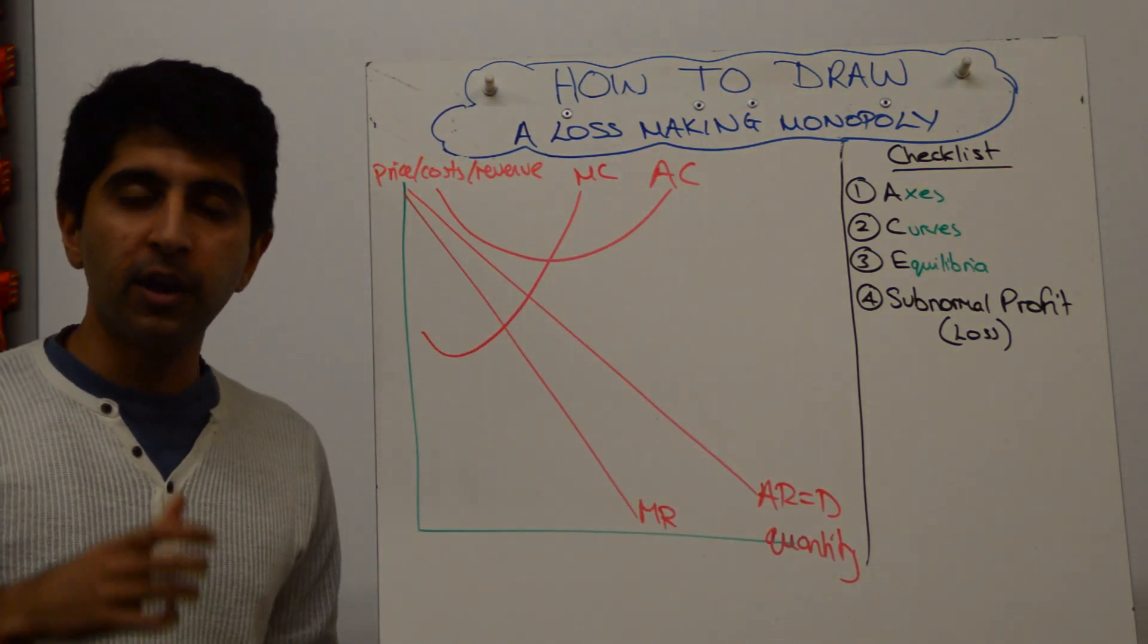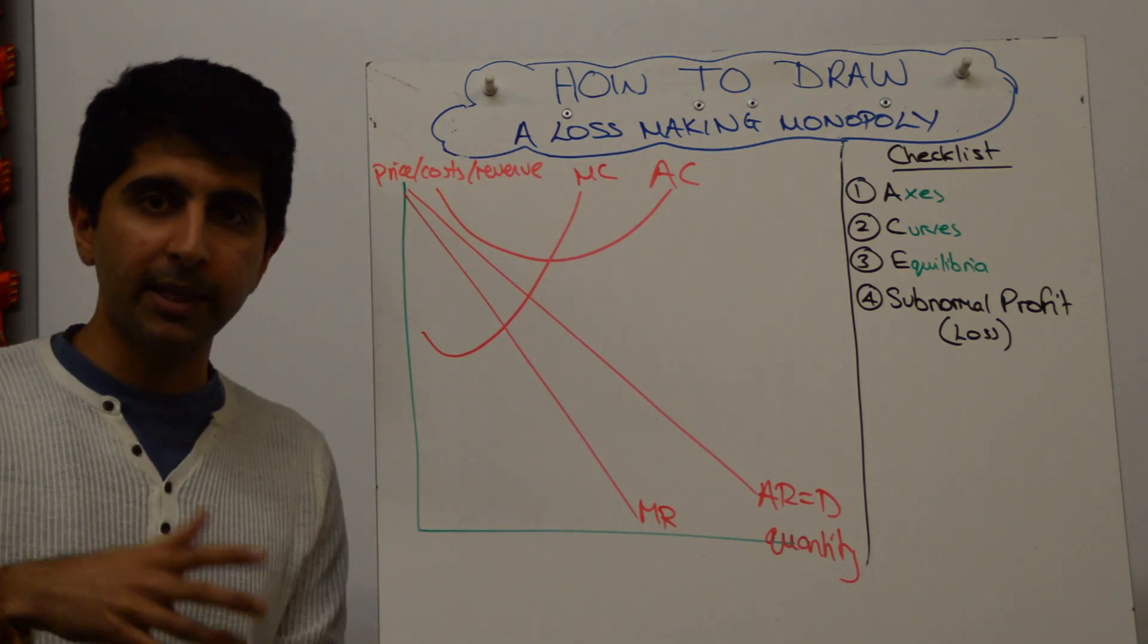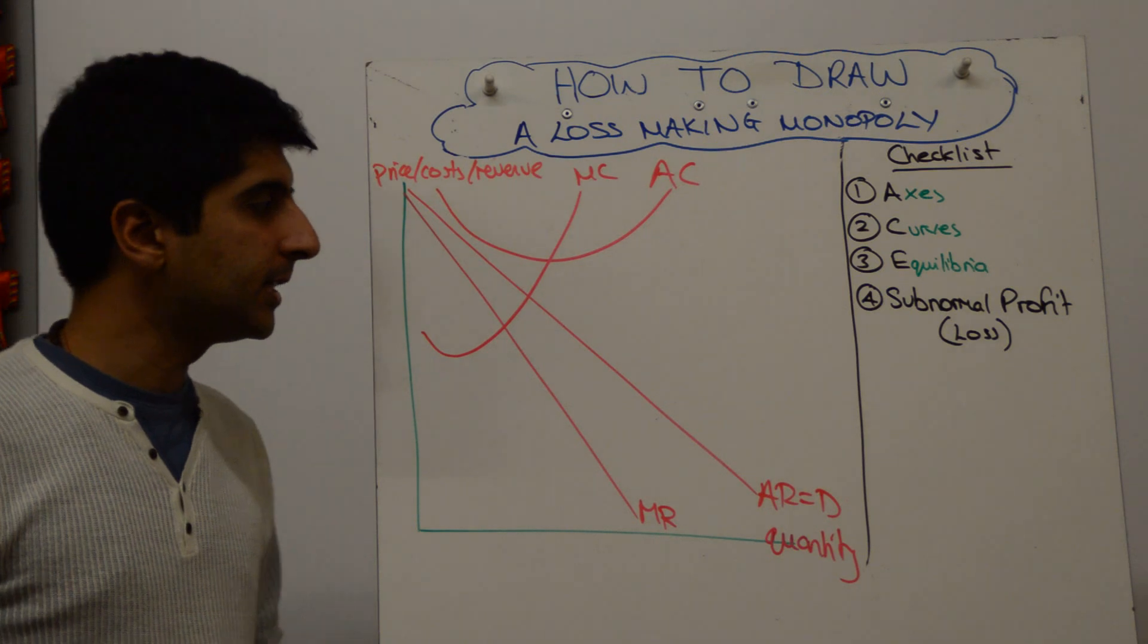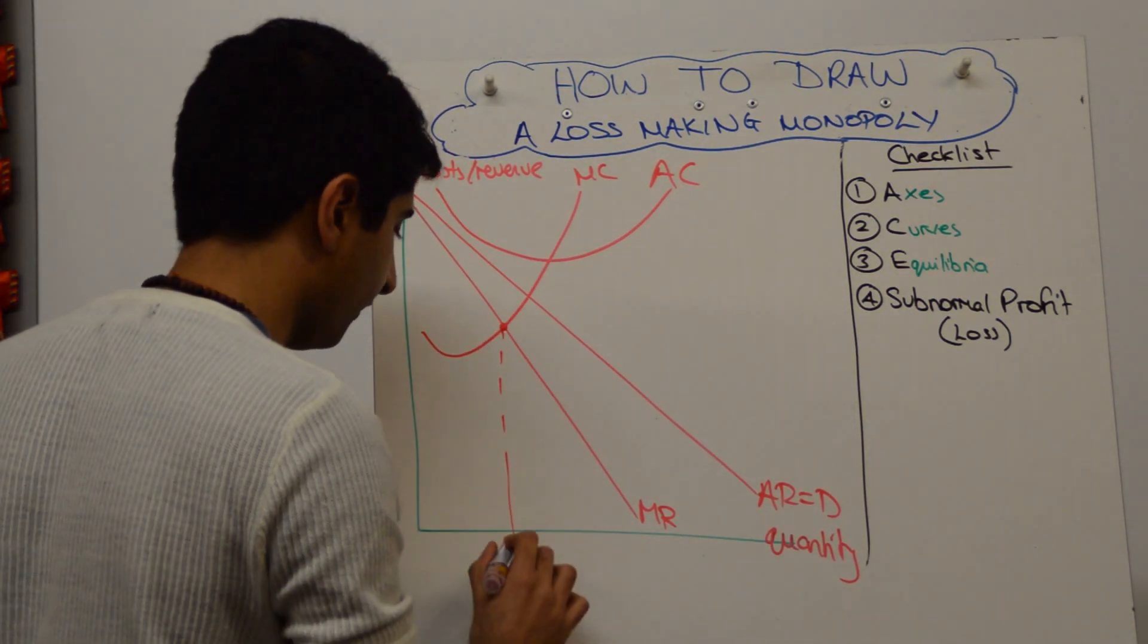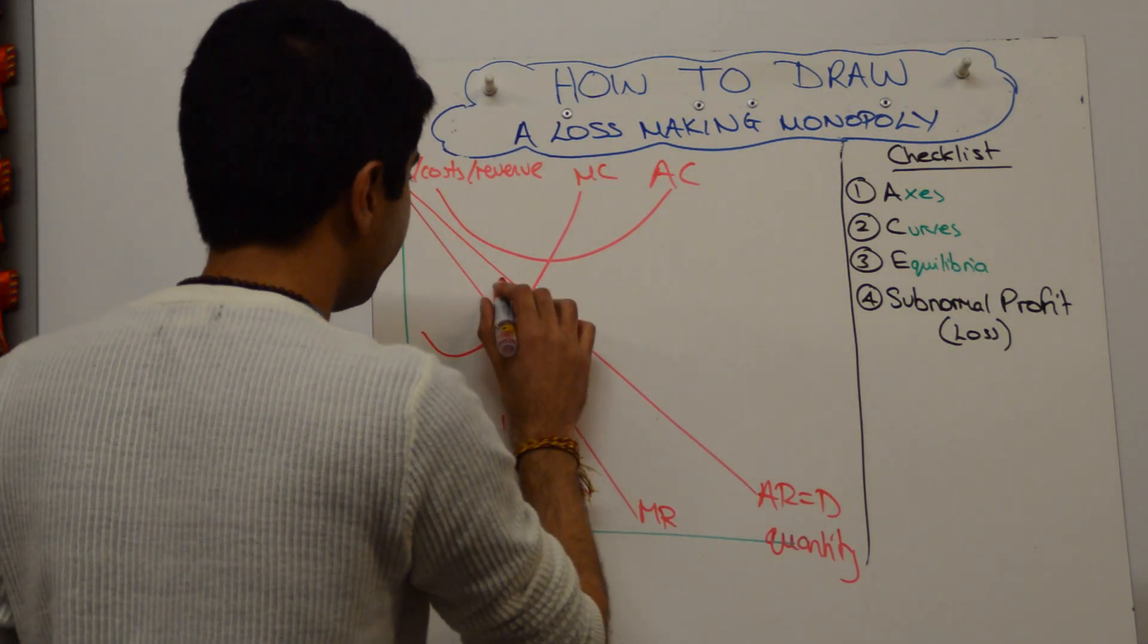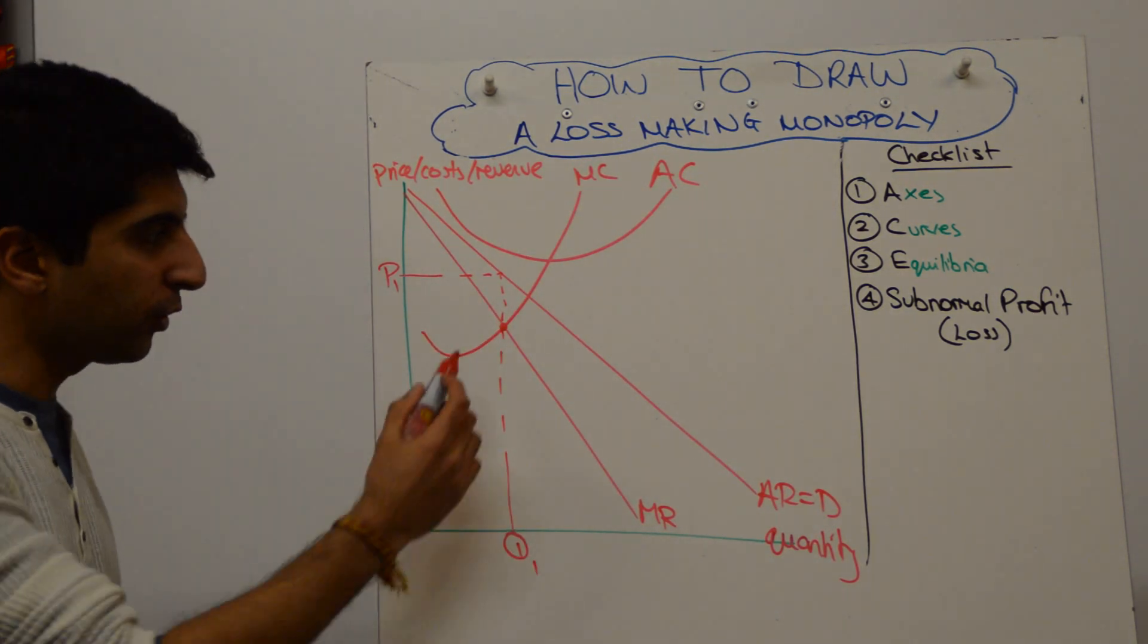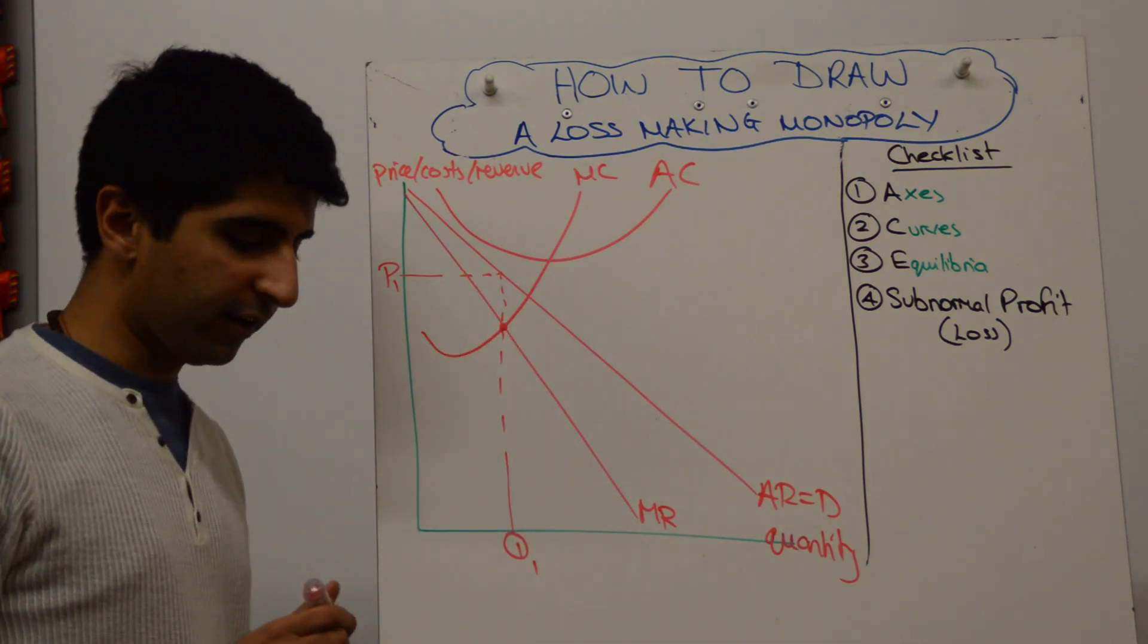Then the same process as normal, the profit maximization point for the monopolist. So even if this monopolist is making a loss, it still wants to profit maximize to minimize that loss, right? So MC is equal to MR, that quantity is the profit maximization level of quantity. We read the price, remember, off the average revenue curve. Don't forget that. So there's the price of P1. Not across from where you get the MC equals MR quantity from, you go up to the AR curve.